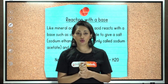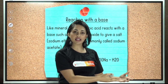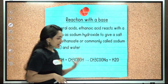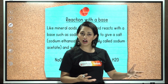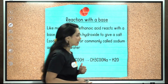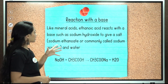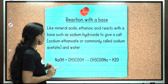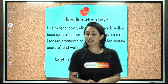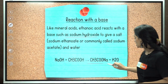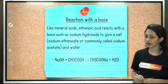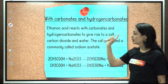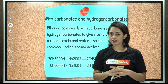Reaction with base: ethanoic acid reacts with a base, so a neutralization reaction takes place. An acid and a base react with each other to give salt, water, and heat — an exothermic reaction. Like mineral acids, ethanoic acid reacts with sodium hydroxide to give sodium ethanoate (sodium acetate) and water: NaOH + CH3COOH → CH3COONa + H2O.